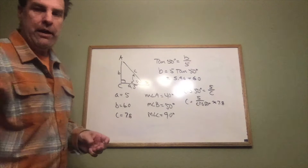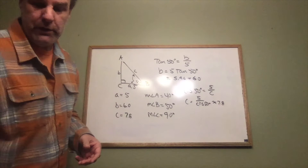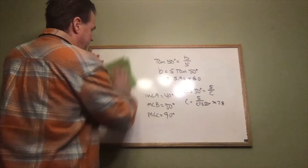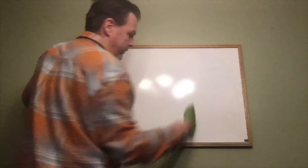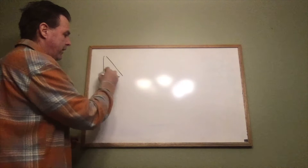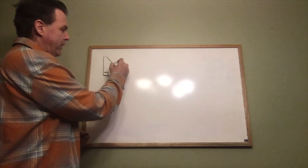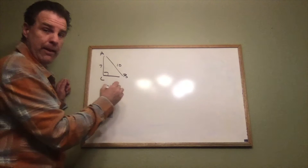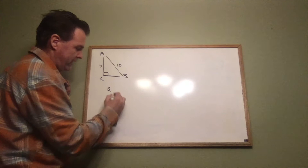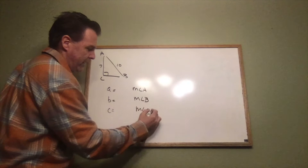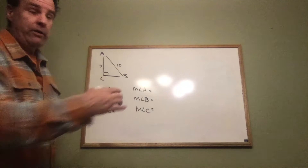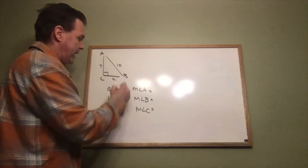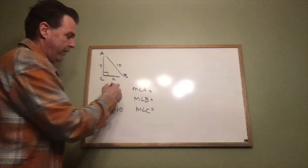The other type of right triangle you'll encounter is one where you're given two sides. For example, if we have a right triangle where the hypotenuse is 10 and one leg is 7, labeling it ABC, we want to find sides a, b, and c, and angles A, B, and C. Since both given values are exact, we can use the Pythagorean theorem to find the missing side a. We know side b is 7, side c is 10, and angle C is 90 degrees.